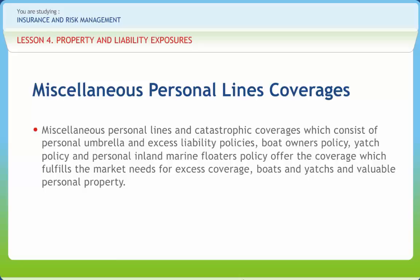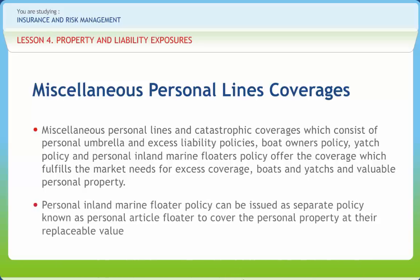Liability and medical payments are also included. Yacht policy is used to cover pleasure craft and may include other types of watercraft such as sailboats and ski boats. Although personal properties are covered under homeowner insurance, the coverage provided is limited by provisions of the policy. Personal inland marine floater policy can be issued as a separate policy, known as a personal article floater, to cover personal property at the replaceable value.